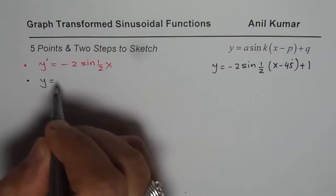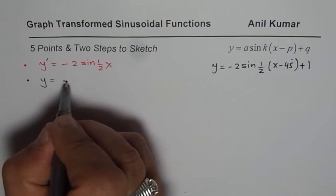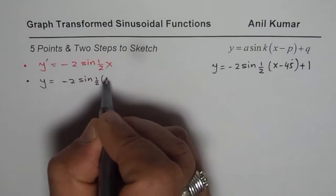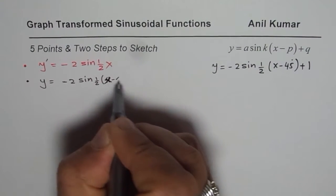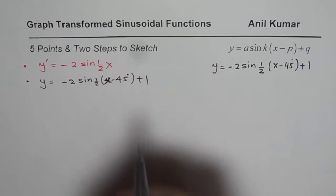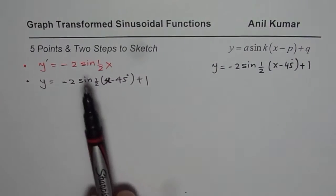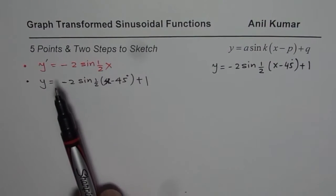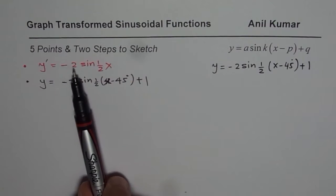So then finally we'll get our real graph. Let me call this as y', and the real graph will be -2 sin of half times (x - 45 degrees) + 1. So we will add the translations to get our result.